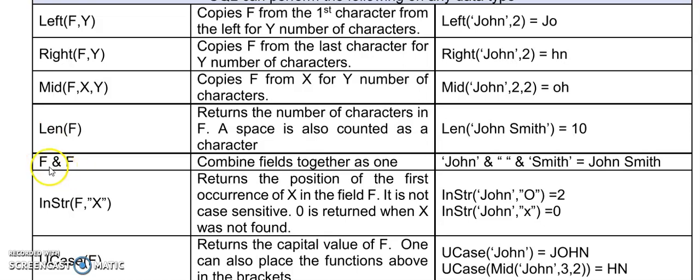To concatenate two fields - that means combine two fields together - instead of using a plus like we would in Delphi, we are going to put an ampersand sign. This is usually the key that you would find if you push shift and seven on your keyboard.